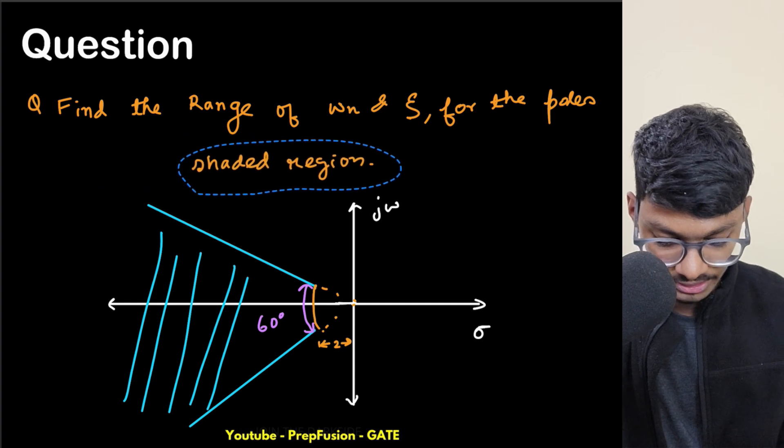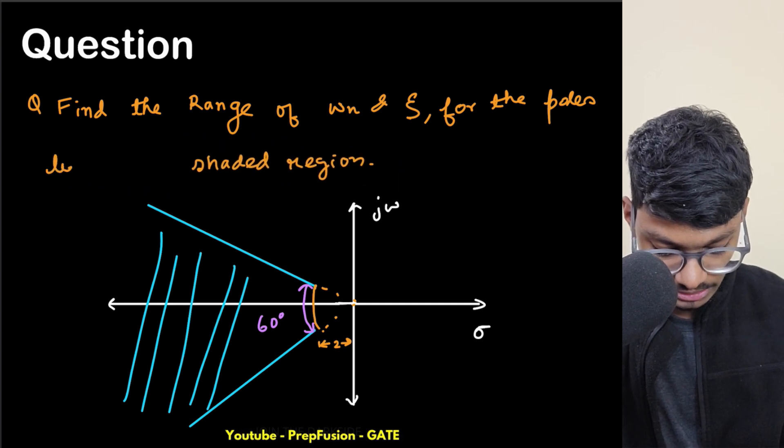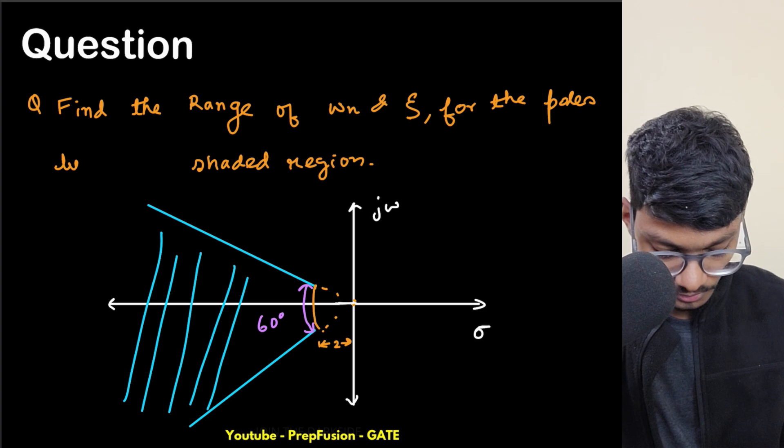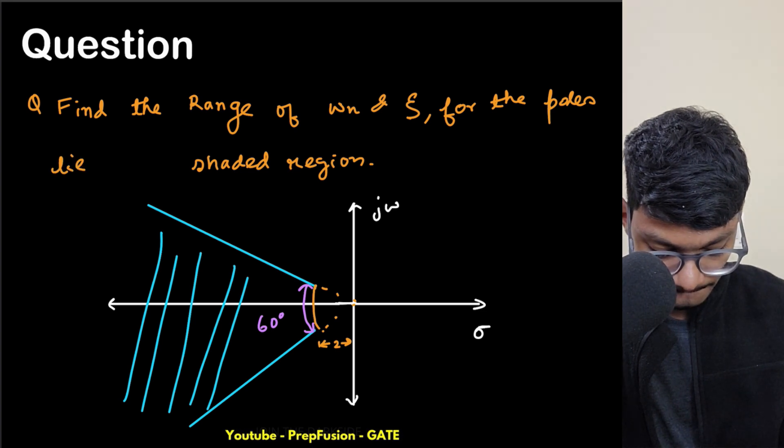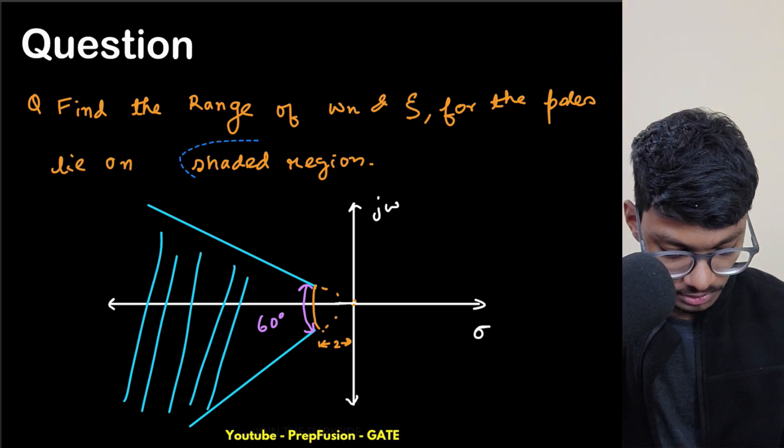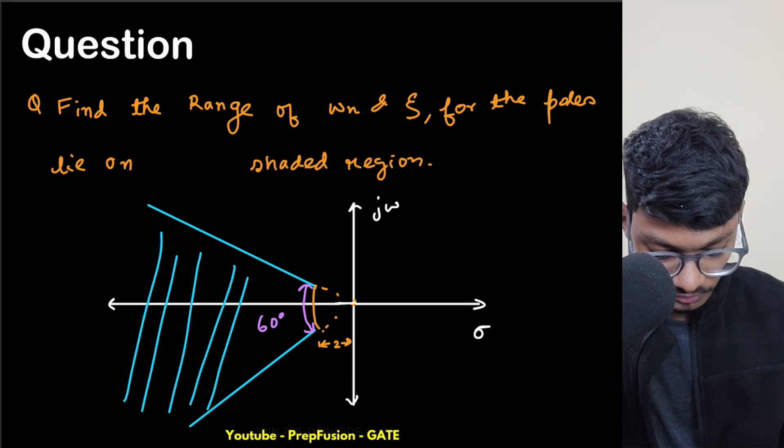For the poles that lie in the shaded region, we have to find the range for omega n and zeta. So how to find the range?